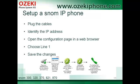Now let's see how to set up a SNOM IP phone. First, plug the UTP cable and the DC adapter to the phone. After the phone is powered on, it gets an IP address by DHCP that you can identify with the navigation menu. Then type the IP address of the device into a web browser.